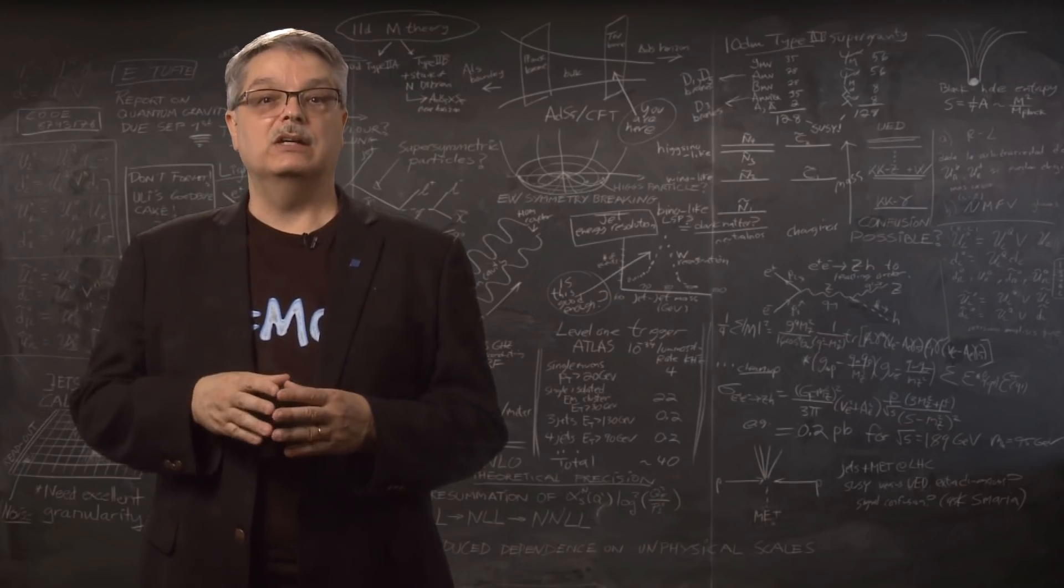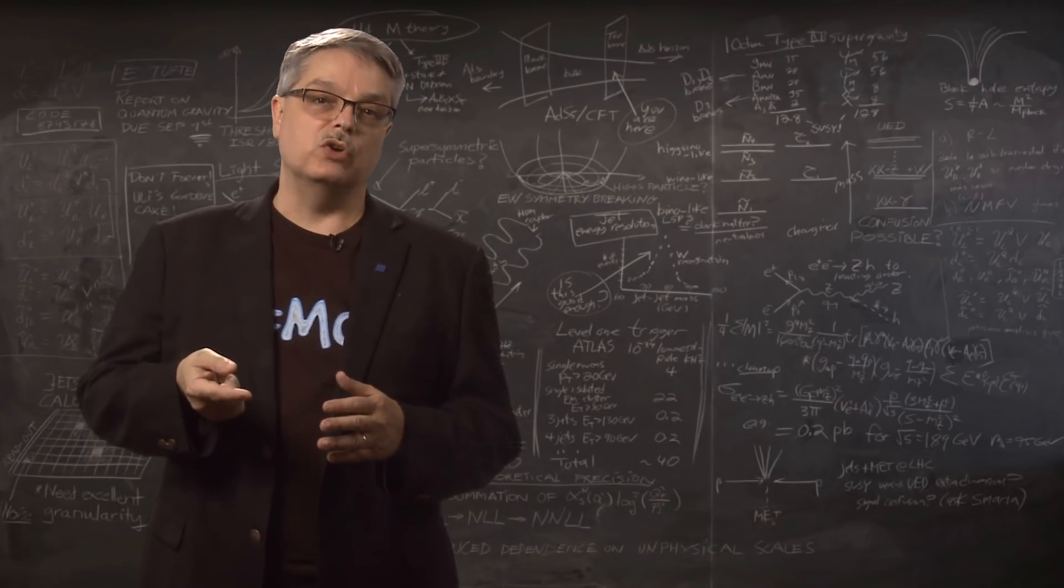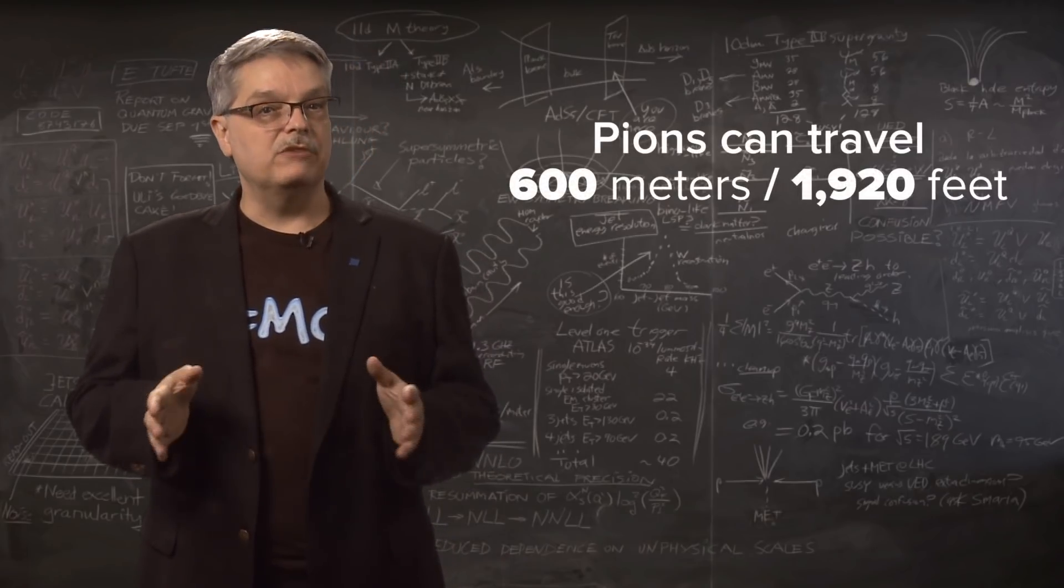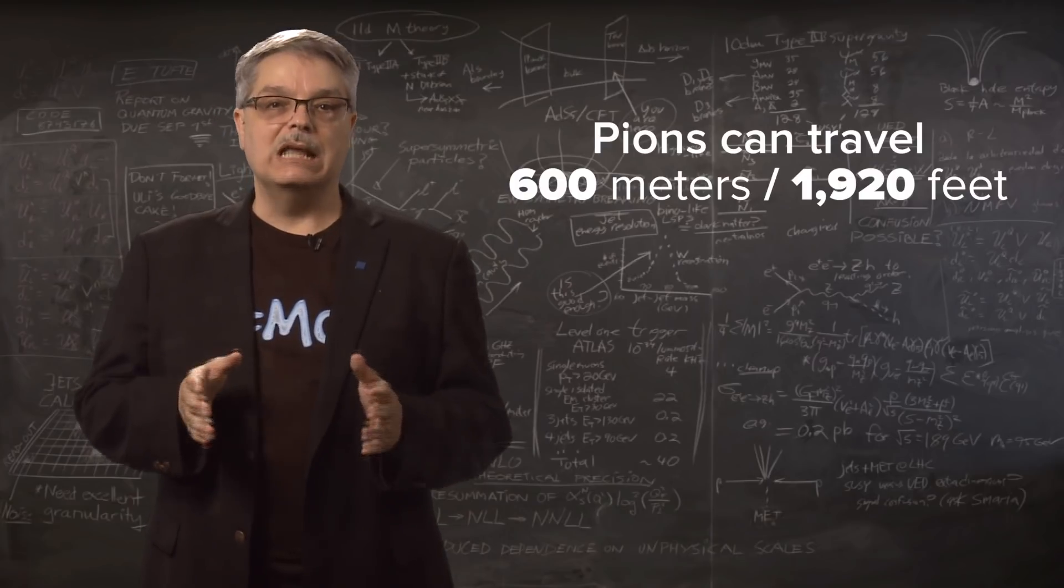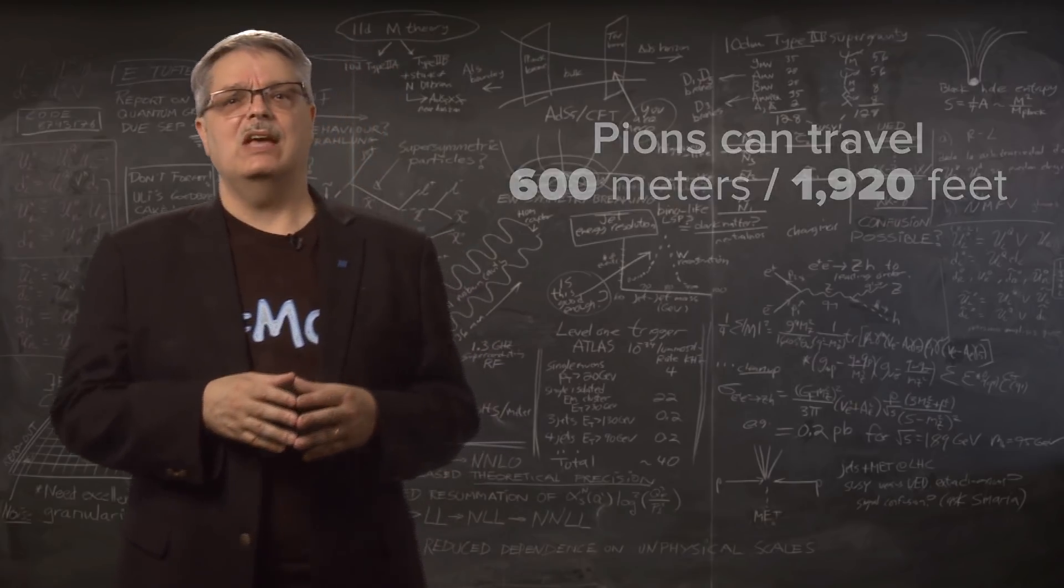And since the speed of a pion with that velocity is near the speed of light, it means that as far as we're concerned, the pion will travel 600 meters, or 1,920 feet. That's over a quarter mile, 36% of a mile to be exact.